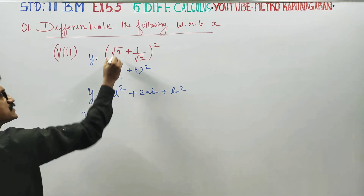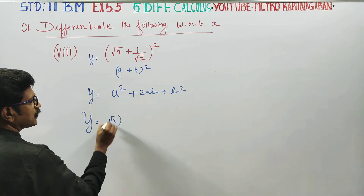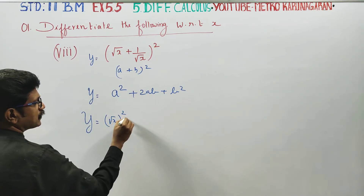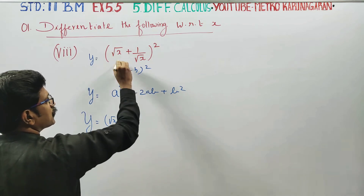y is equal to — what is my a? a is root x. So root x whole square, plus 2 times a into b.